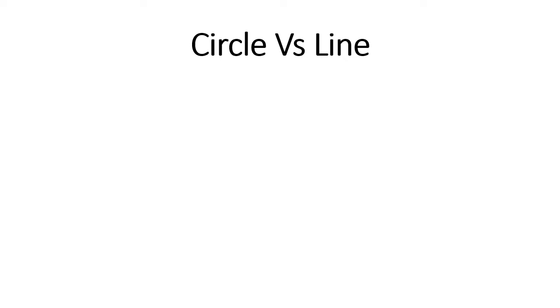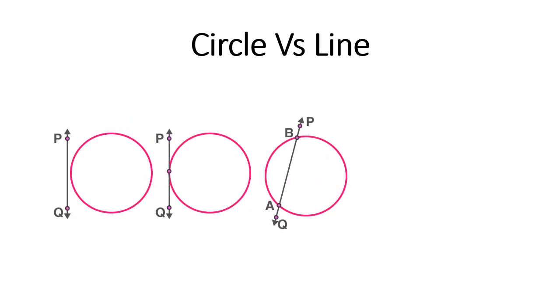Here we will discuss about Circle vs Line. Here you can see we have a line and a circle in three cases. In the first case, there is no point of contact. You can see the line and the boundary of the circle are not at all touching each other, not at all intersecting. So you can say no point of contact. Then here we have one point. Line PQ is meeting up circle at a single point. And in the third case, you can see a line PQ is intersecting circle at two different points. So this is the only possibility.